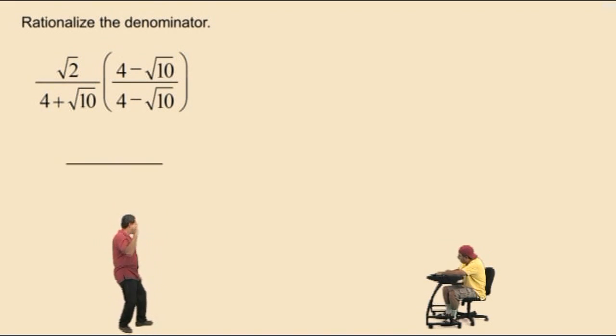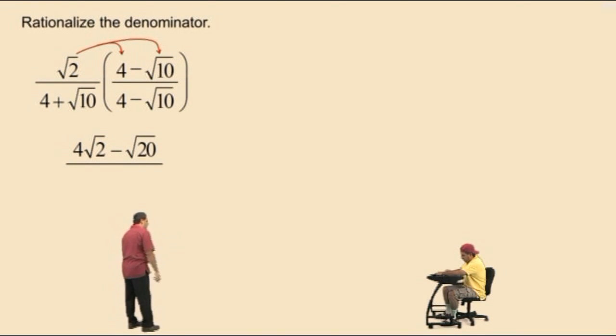Now in the numerator, we must distribute. Charlie, what's square root of 2 times 4? 4 square root of 2. That's right. Now bring out your subtraction. What's square root of 2 times square root of 10? Square root of 20. Very nice there.